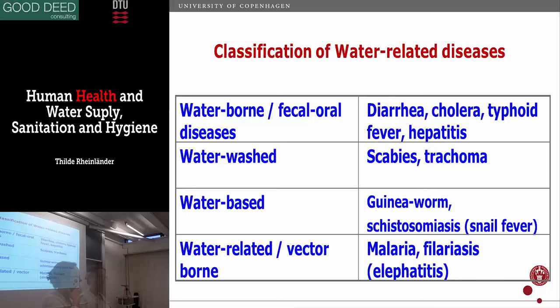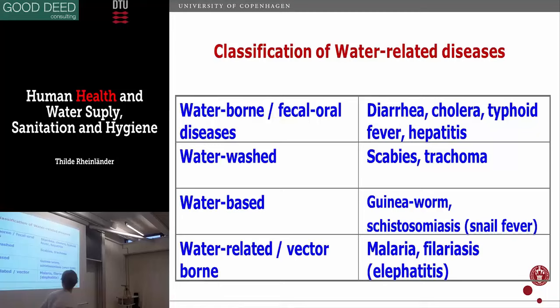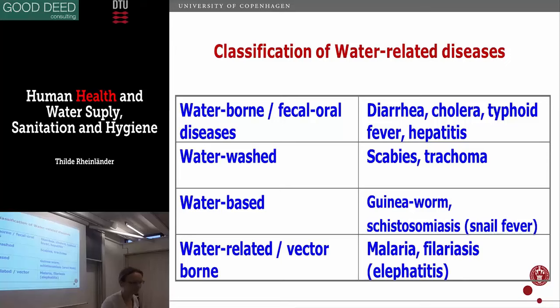What is a water-based disease? When humans are exposed to water, they are at risk of getting the disease. A water-related disease — in this classification, it's mainly about the vector, the agent that transmits the disease, that lives and is dependent on the water as a breeding site. Malaria and filariasis are mentioned here.